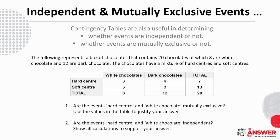Now we're going to look at how contingency tables can be useful in determining whether events are independent or mutually exclusive. Let's consider the following contingency table, which contains information regarding a box of 20 chocolates. There are white chocolates and dark chocolates, as well as chocolates with hard centres and chocolates with soft centres. The first question asks whether the events hard centre and white chocolate are mutually exclusive, and we're asked to use the values in the table to justify our answer.